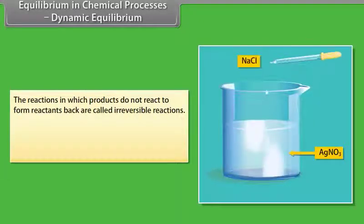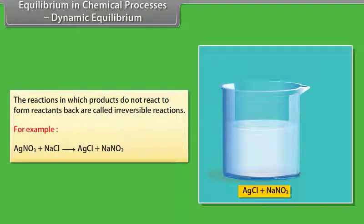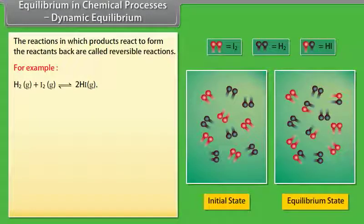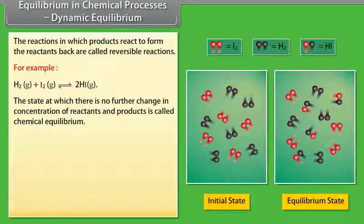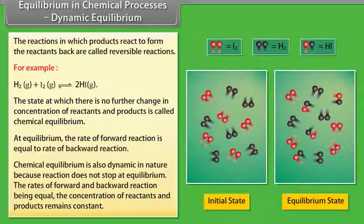Equilibrium in Chemical Processes — Dynamic Equilibrium: Reactions in which products do not react to form reactants back are called irreversible reactions (e.g., silver nitrate reacting with sodium chloride). Reactions in which products react to form reactants back are called reversible reactions, represented by two arrows pointing in opposite directions. The state at which there is no further change in concentration of reactants and products is called chemical equilibrium. At equilibrium, the rate of the forward reaction equals the rate of the backward reaction. Chemical equilibrium is dynamic — reaction does not stop, but concentrations remain constant.